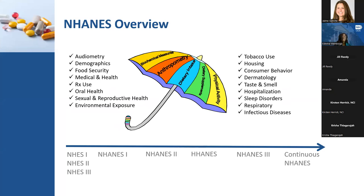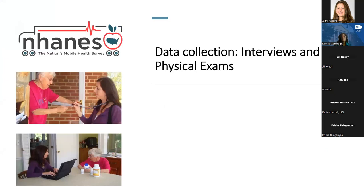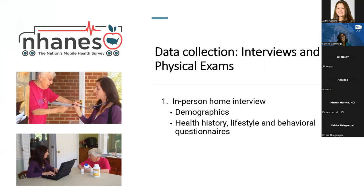The survey has been running for a long time since 1959. In 1971, the dietary component was added. And ODS has been funding the dietary supplement component since 1999 in continuous NHANES, and also has funded the collection of several biomarkers since then. Dietary data is collected in three parts in NHANES. The first part is the in-person home interview, where demographic data is collected together with health history, lifestyle, and behavioral questions. Also the 30-day dietary supplement use is asked here, plus the supplement inventory is collected here.